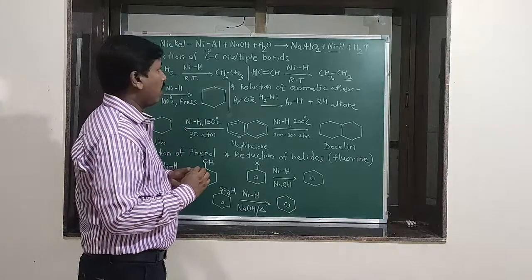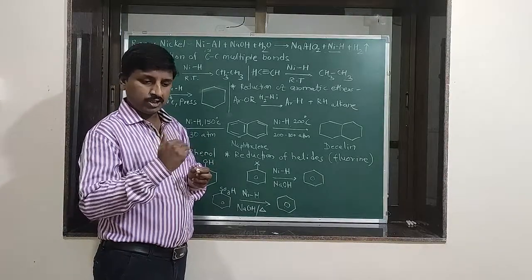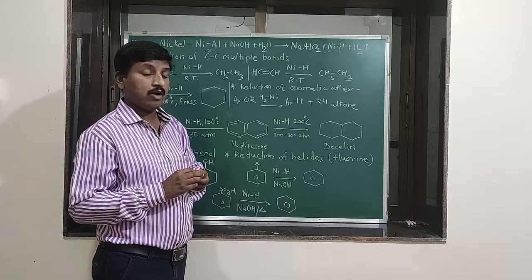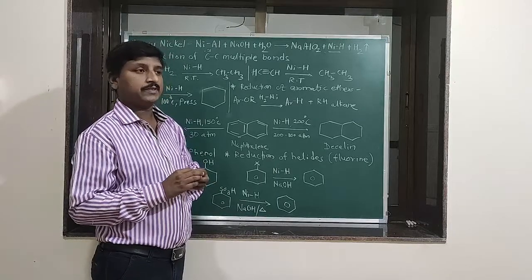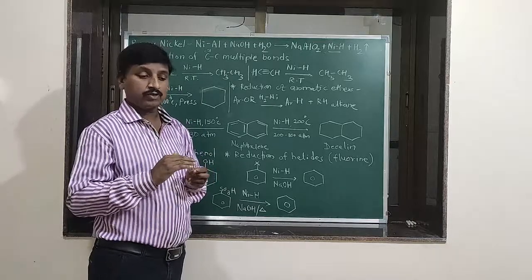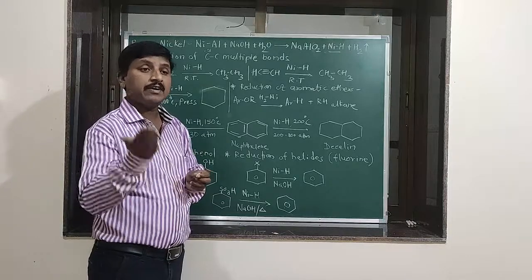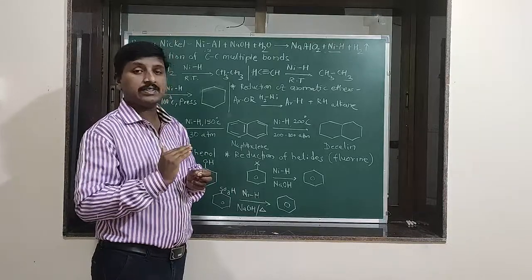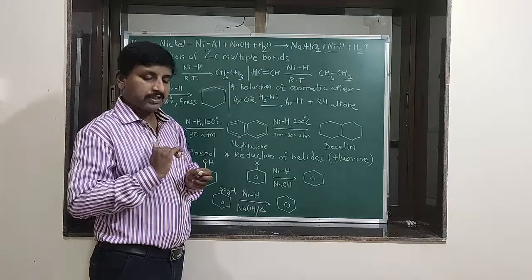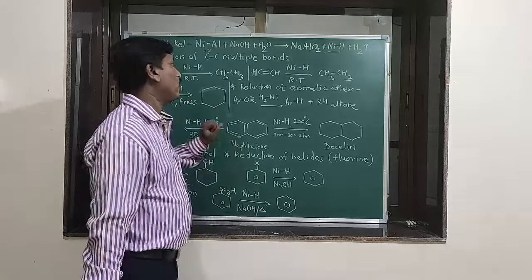After that, the solution is heated at 120 degrees Celsius for about 4 hours. Again, a little quantity of ice-cold NaOH solution is added and the temperature is maintained at around 120 degrees Celsius. When the evolution of hydrogen gas stops, the formation of Raney Nickel is considered complete.